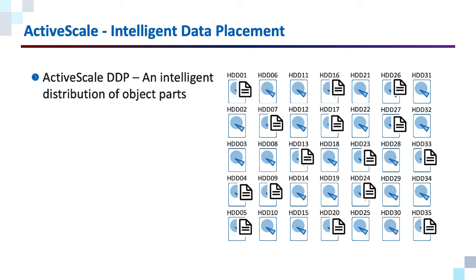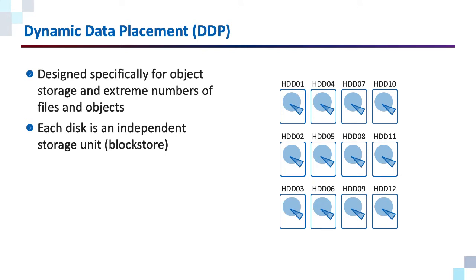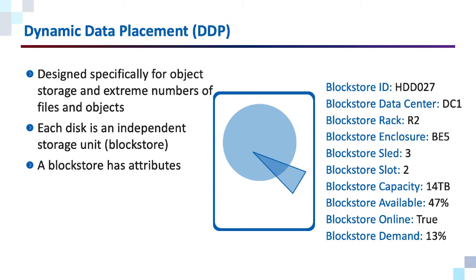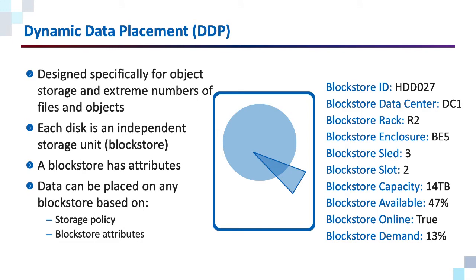On our website, there's an in-depth video on DDP and how it differentiates from other data placement algorithms, so I encourage you to take a look at that as well. DDP was designed specifically for object storage and the extreme number of objects that need to be managed. Under the covers in an ActiveScale system, there is a distributed file system, and each disk in that distributed file system is considered an individual storage unit, or block store. These block stores have attributes, and data can be placed on any block store based on storage policy and the block store attributes.